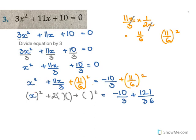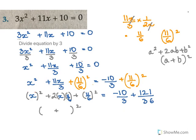Here a = x and b = 11/6, and we have the 2ab term. Recall that a² + 2ab + b² = (a + b)². So the left side becomes (x + 11/6)². Now we take the LCM of 3 and 36, which is 36.